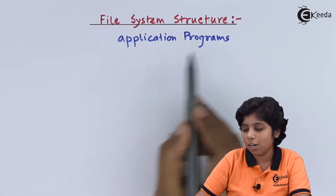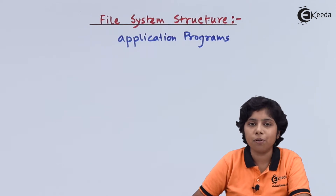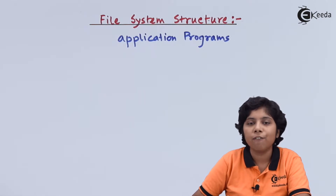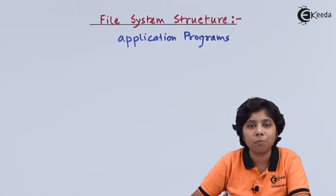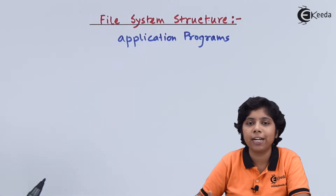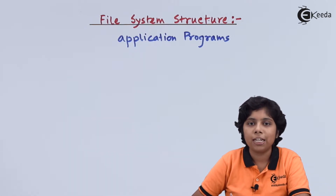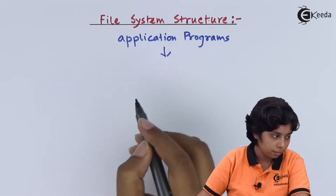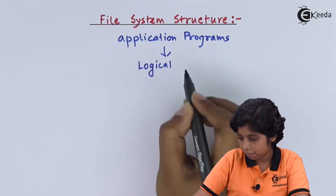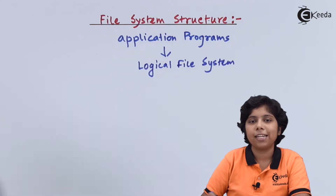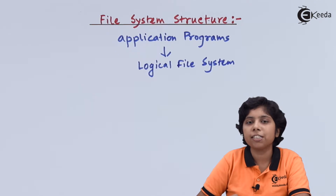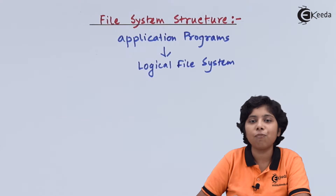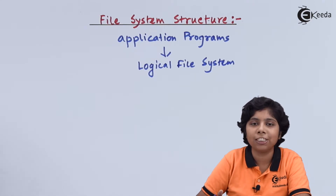At the top of the file system structure are the application programs — the end products of all operations. In this file system structure presented to the user, we define the attributes of a file, the operations to be performed on the file, and all directory entries mapped from the logical to the physical section. Below that is the logical file system, which contains software information about the files. Next is the file organization module, which organizes file information and controls translation of logical to physical file addresses.